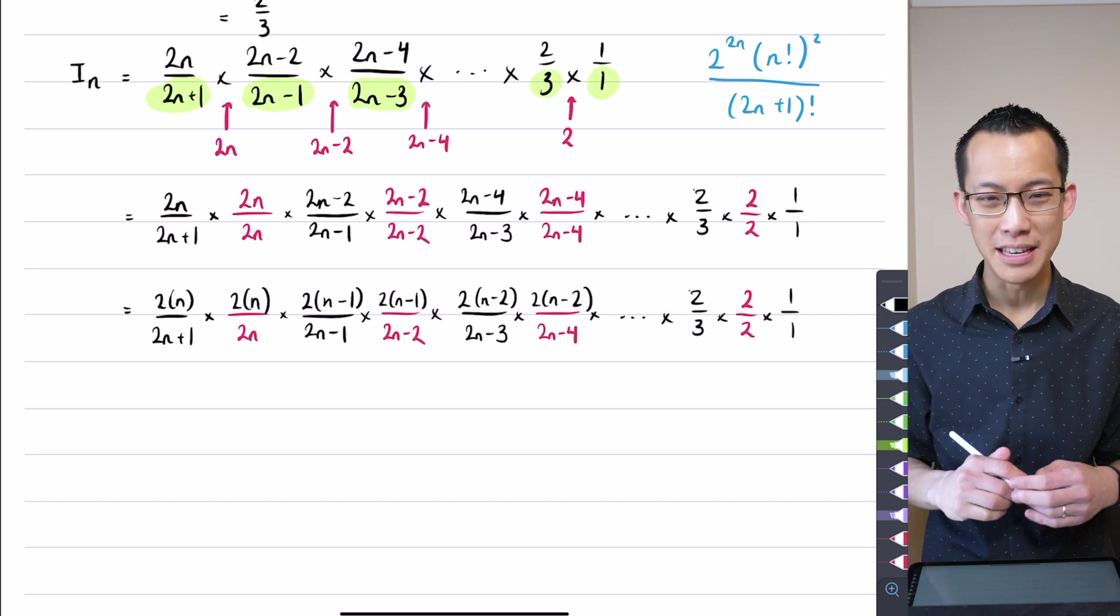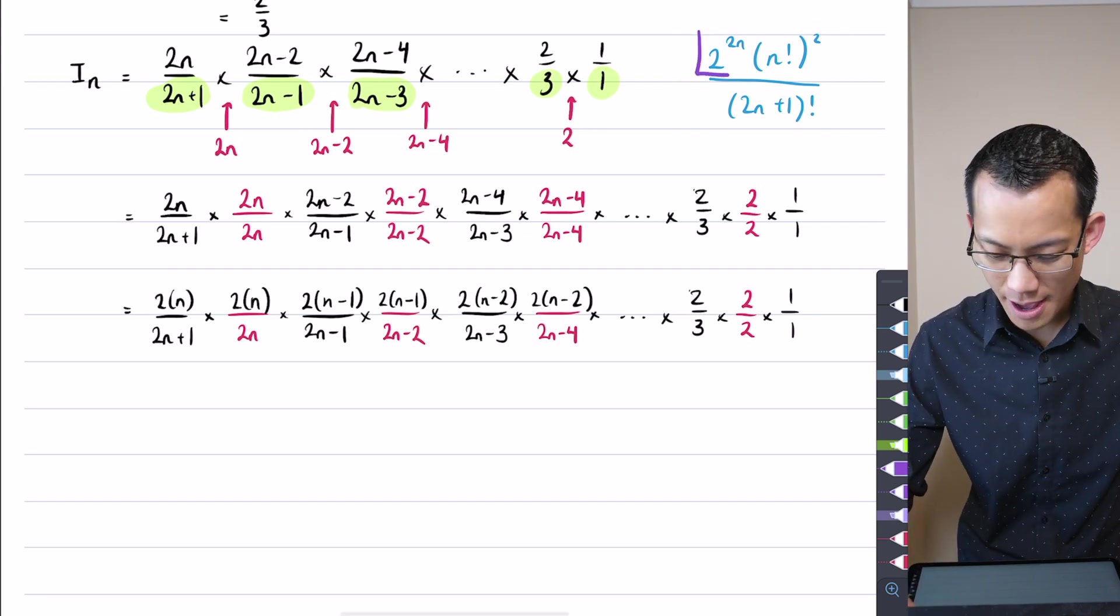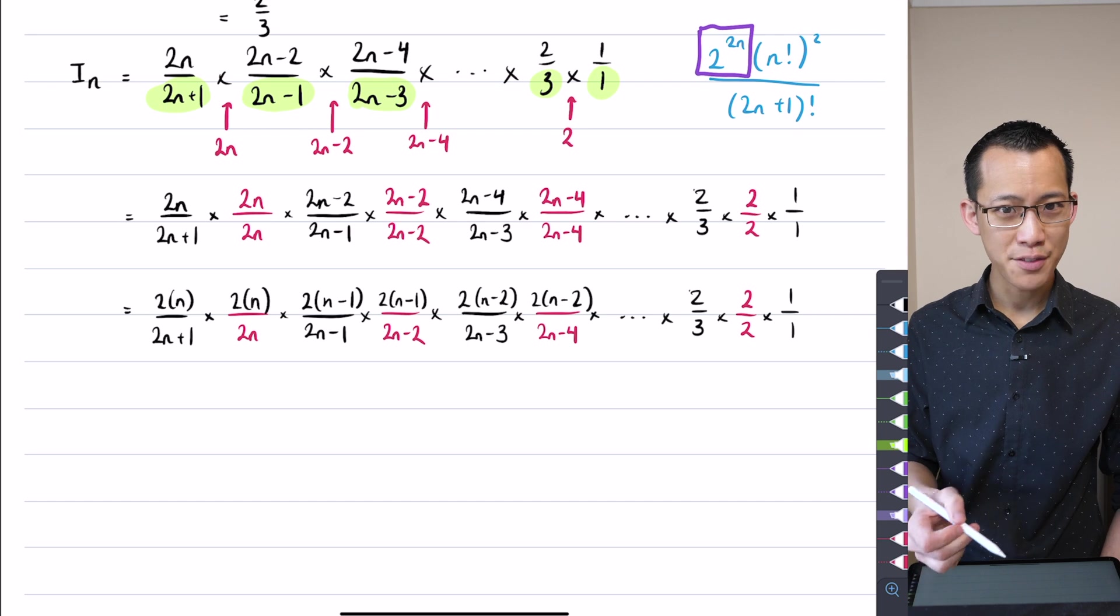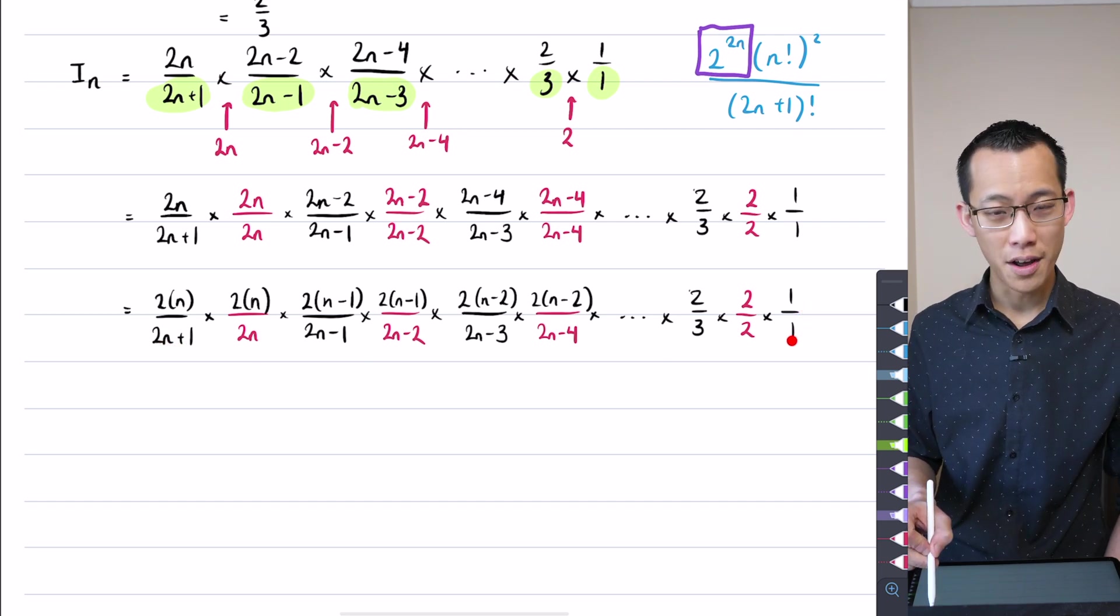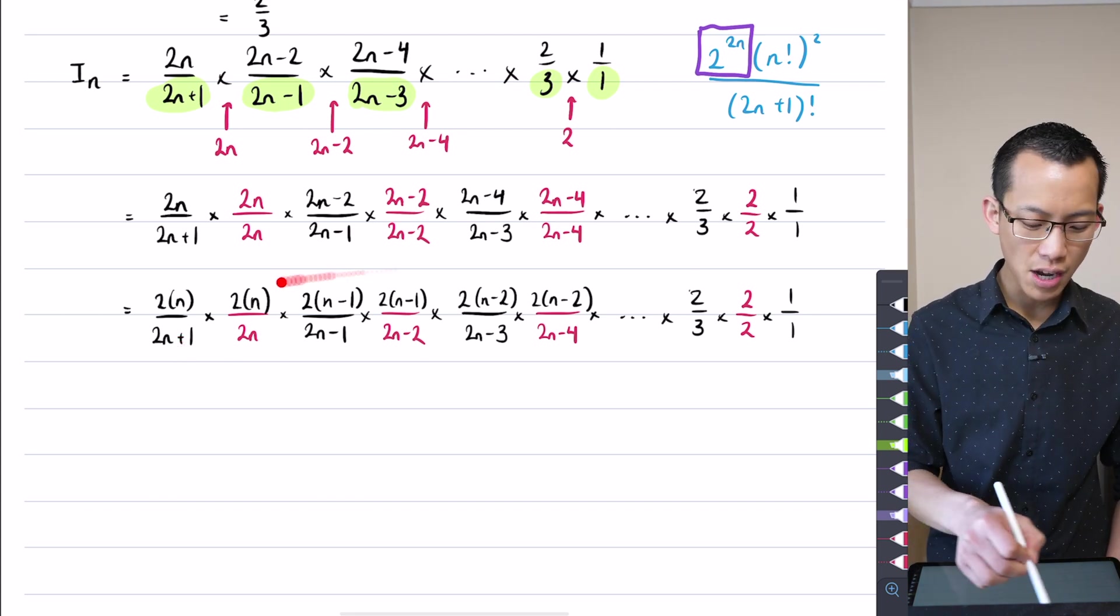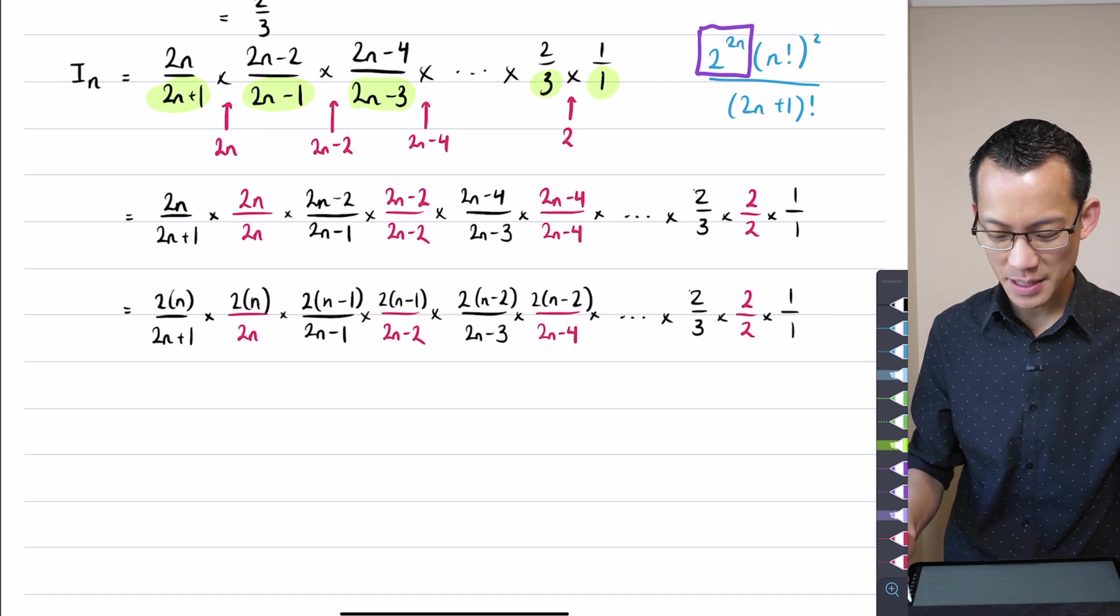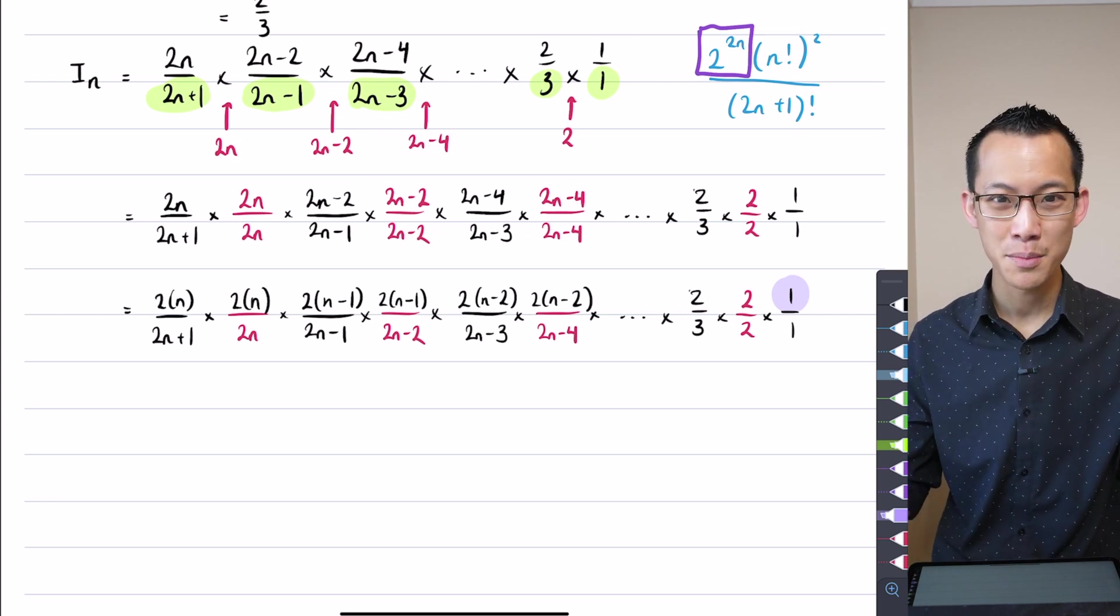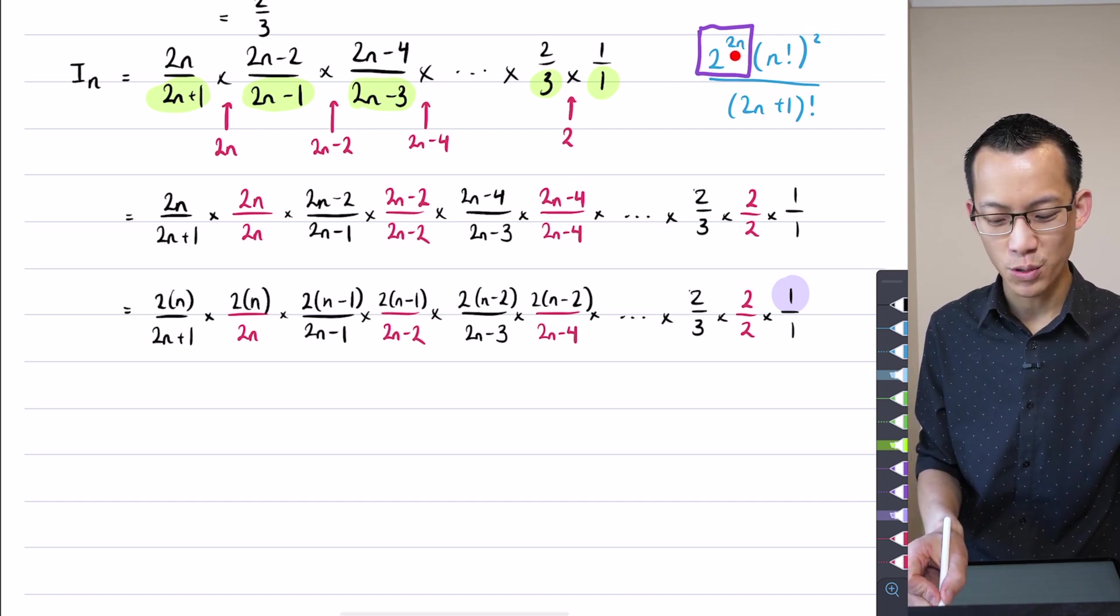Now, why would I bother to take out all of these twos? I wonder if you can see back on your original piece of working why this is important. Look right there. See that? That two to the two n means a bunch of twos were factorized out. And you have to think, well, do I have the right number of twos? And the answer is yes. How many terms are there in this entire product? We start from one, two, three. It's just the counting numbers and we go all the way up to 2n plus 1. So this entire line has 2n plus 1 terms in it. But not every term has a two in the numerator. There's a single term right here that doesn't have a two in it. So even though I've got 2n plus 1 terms, one of those terms is missing the two. So 2n plus 1 minus that one gives you this 2n that you're looking for.